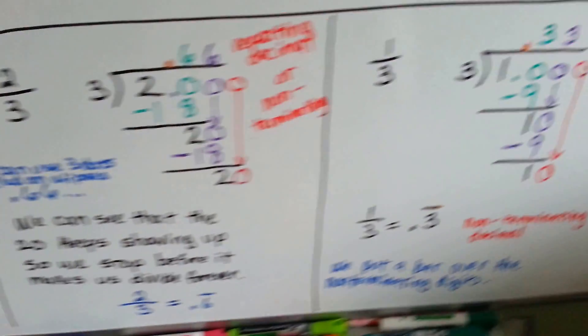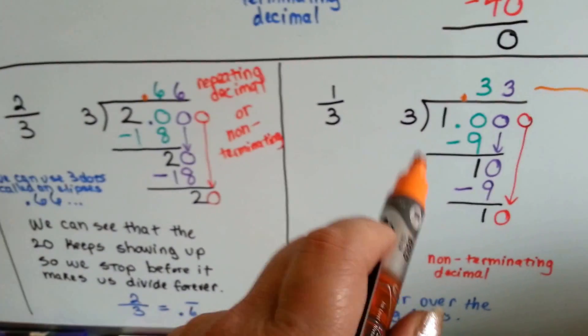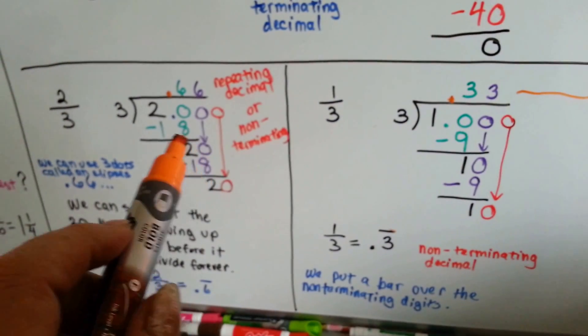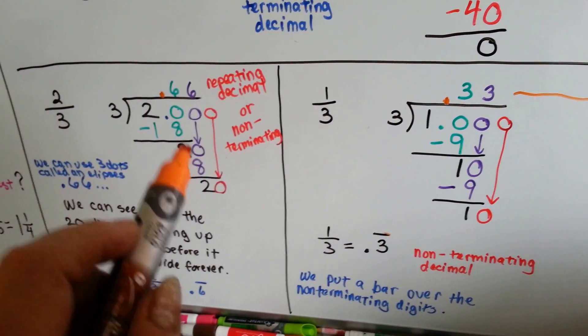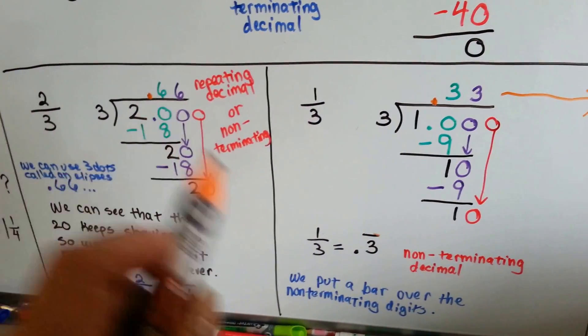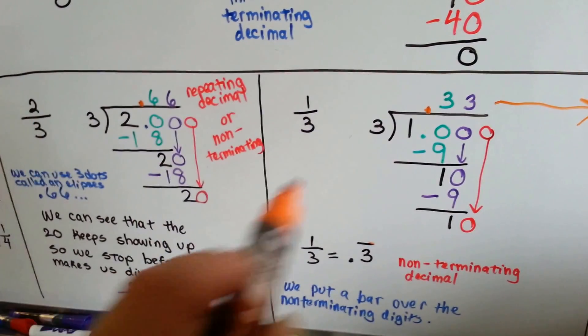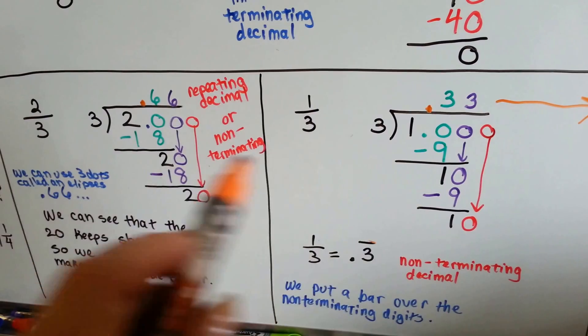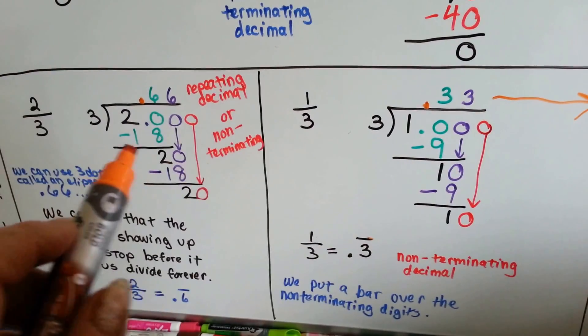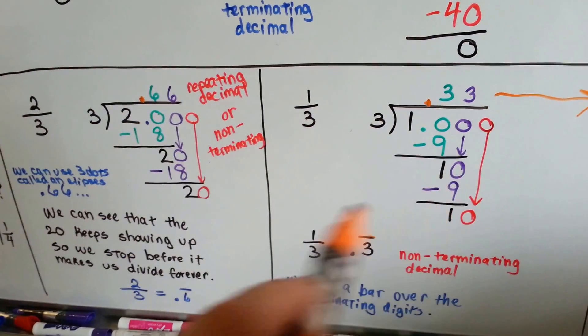If it was one-third, it's going to do the exact same thing. But instead of being a twenty that keeps repeating, with a six in the quotient, it's a ten that keeps repeating, and a three in the quotient. Because a third is half of two-thirds, it does everything, it does exactly half. Three is half of six, and ten is half of twenty, so it just keeps repeating.